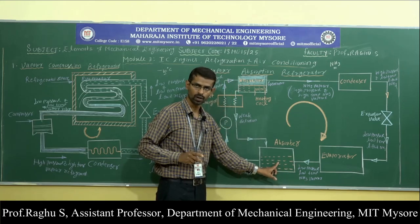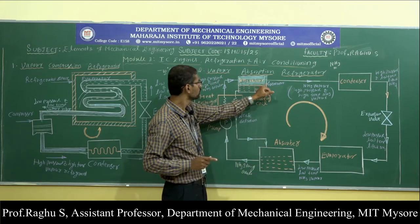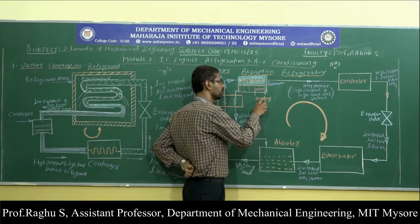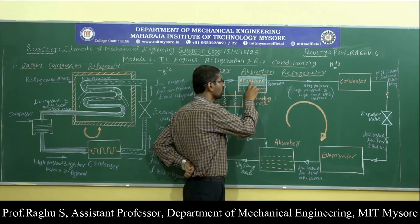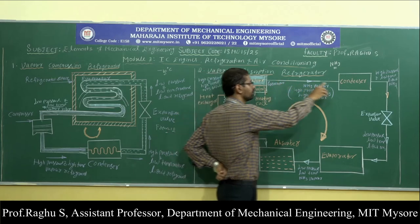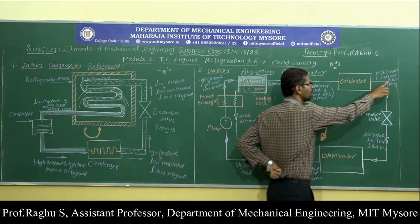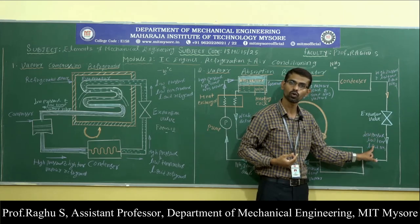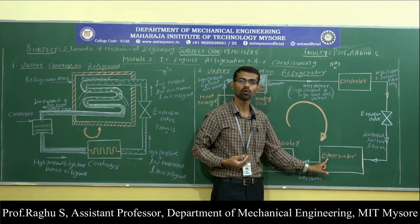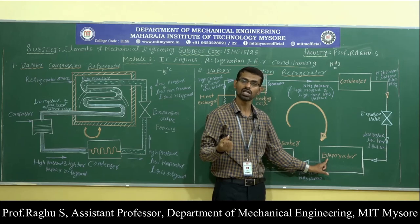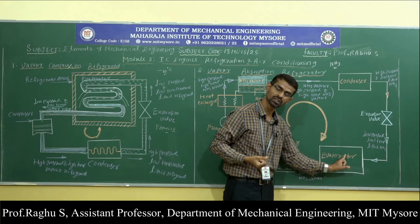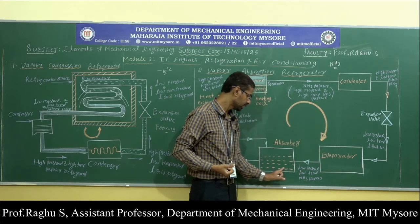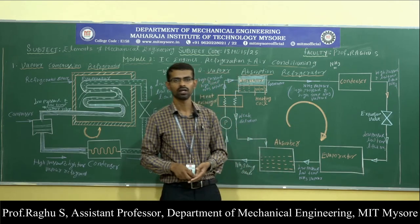Once the strong ammonia solution is heated in the vapour generator, ammonia vapour gets separated and the solution becomes weak. This weak ammonia solution is sent back to the absorber through the heat exchanger. In the absorber, ammonia vapour dissolves in the weak ammonia solution, forming strong ammonia solution again. This is pumped to the vapour generator, and the cycle repeats. The condenser converts vapour to liquid; the expansion valve reduces pressure and temperature; the evaporator absorbs heat from the refrigerated space, reducing its temperature; liquid ammonia converts back to vapour; the cycle repeats. This is the working of the vapour absorption refrigerator.